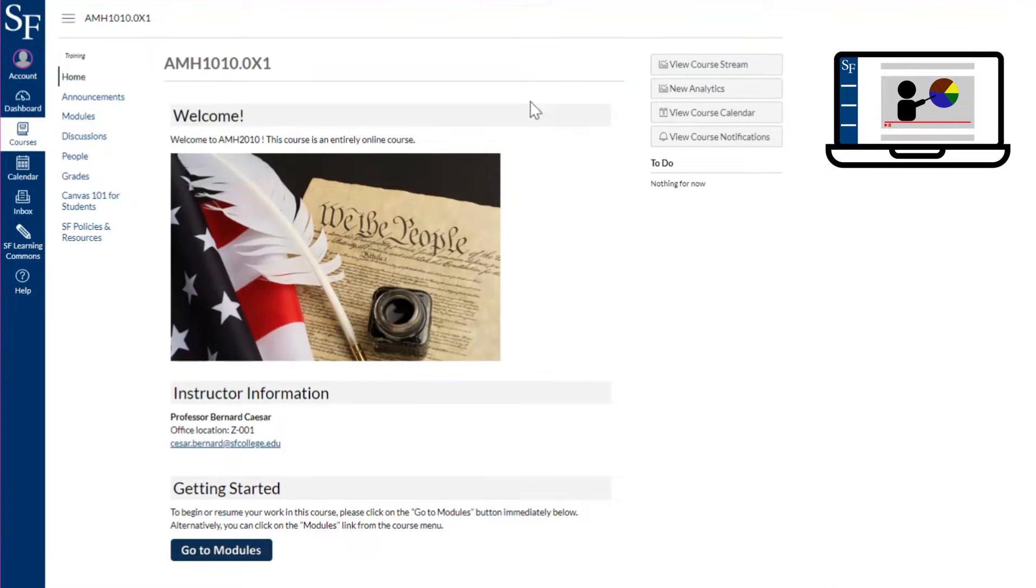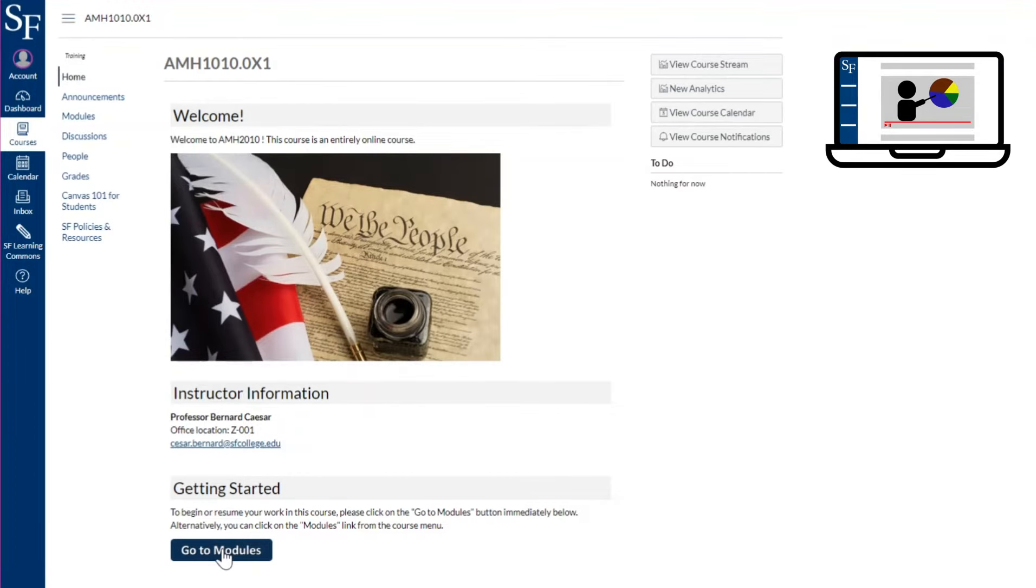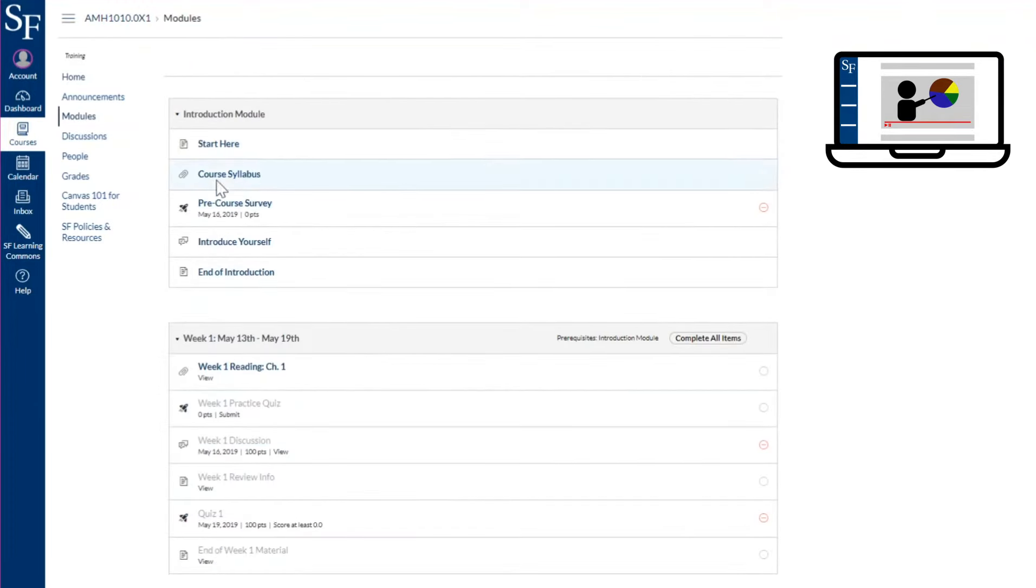SF Online has been around since 1999. Classes are organized in Canvas, a learning management system. Course materials may include on-demand videos, reading assignments, quizzes, or other resources. You'll have assignments and deadlines to keep up with, but you'll have more flexibility throughout the day. You can work during the times that best fit your schedule.